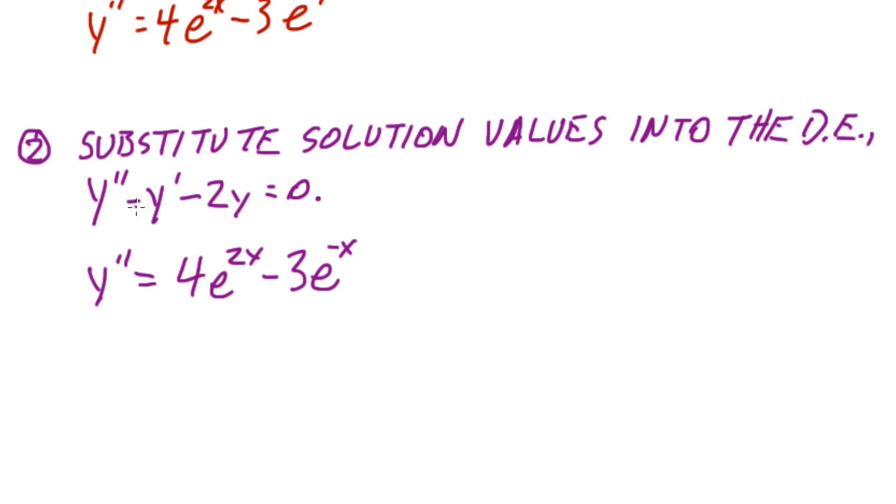For the y prime notice it has a coefficient of negative 1. We'll have to multiply through by that coefficient. And the y has a coefficient of negative 2.